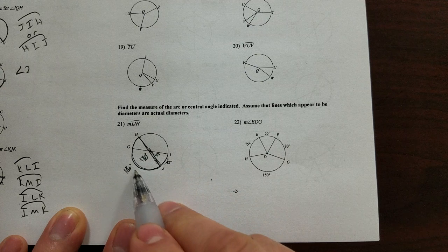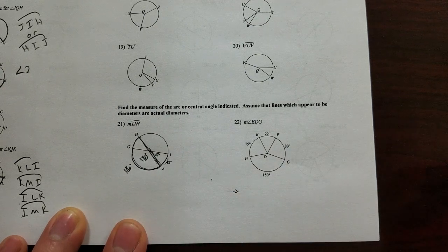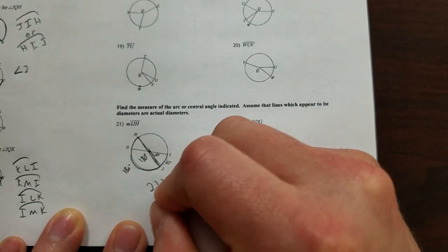So to get from H all the way around to I is just 180 plus 42. So 222, 222 degrees.